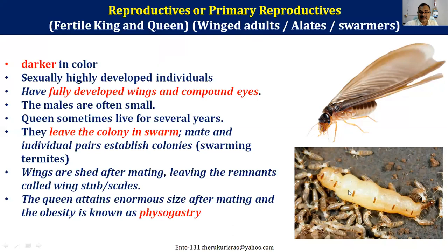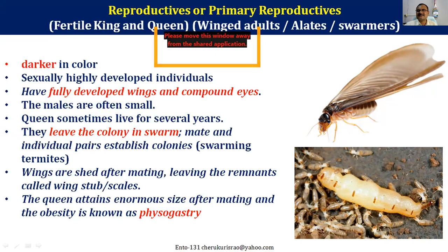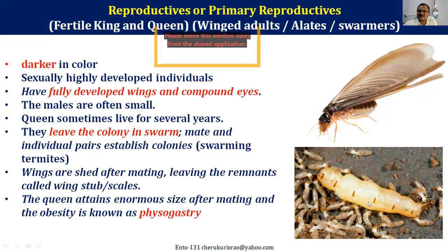Thousands of eggs are inside the queen. You wouldn't realize it's a female termite — it looks very large, actually like a larva or caterpillar of any Lepidoptera. The queen is very big compared to other termites. That stage is called 'physogastric' — you should remember this term. The queen attains an enormous size after mating; the abdomen increases enormously while the head and thorax become very small.